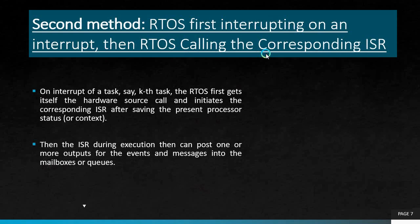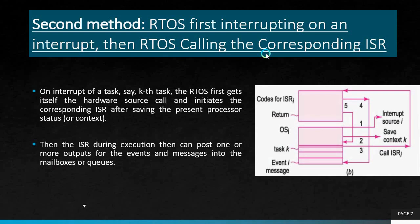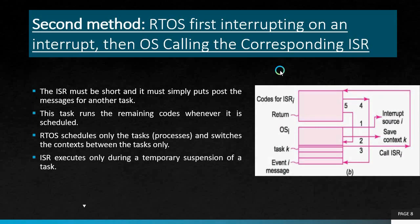The second method is: RTOS first interrupted on an interrupt, then RTOS calls the corresponding ISR. When a task is interrupted, the RTOS gets the hardware source code, then after saving the present processor status it initiates the corresponding ISR. During execution, the ISR can post one or more outputs for events and messages into mailboxes or queues. In the figure: step 1 — interrupt occurs; step 2 — current context K is saved; step 3 — ISR starts executing.